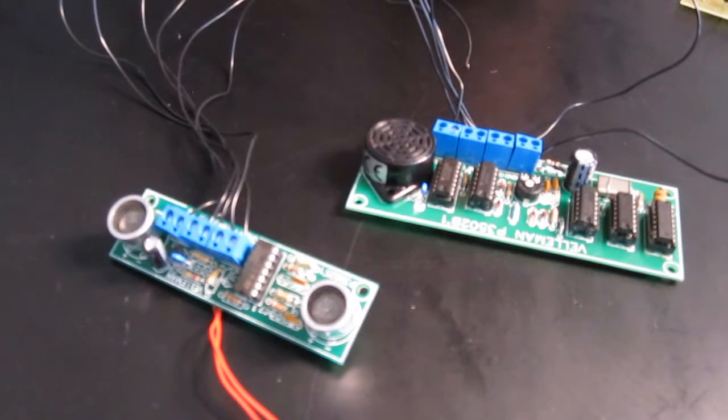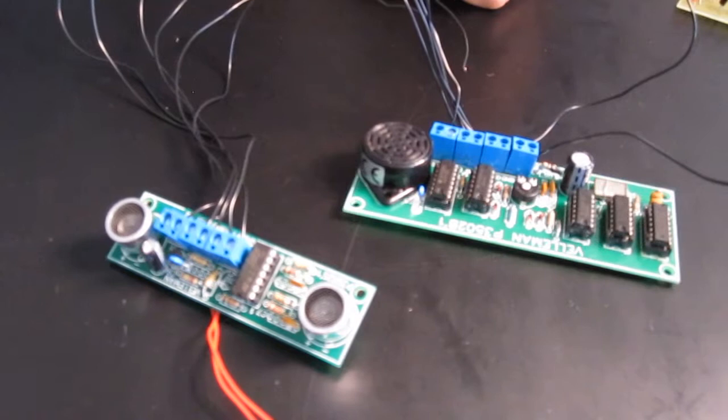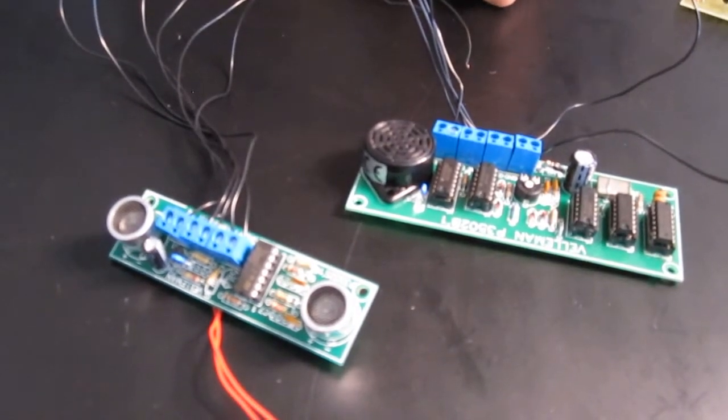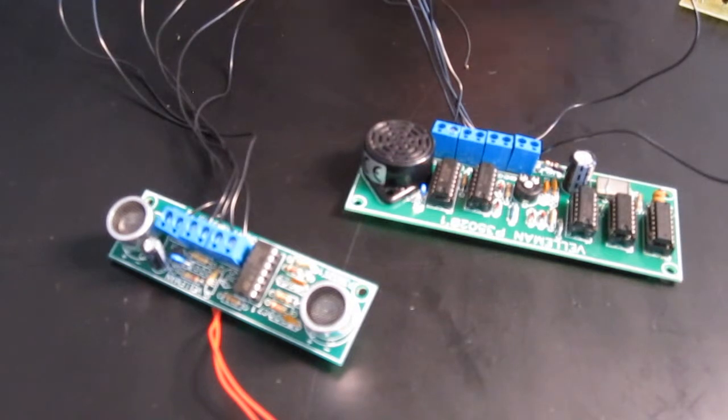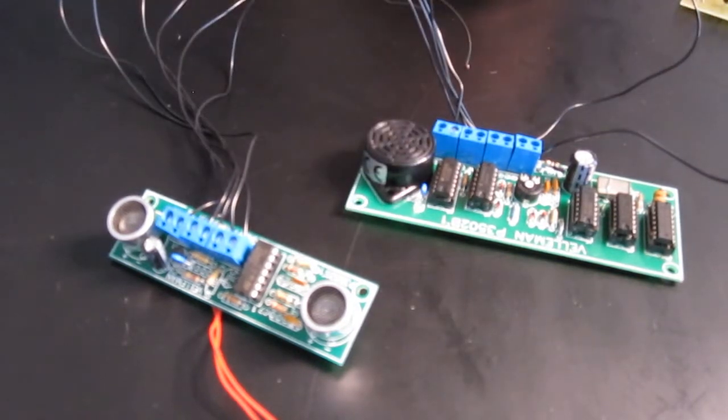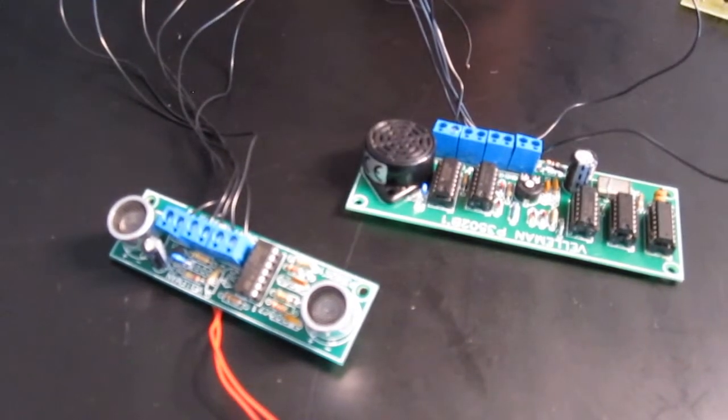I also have a potentiometer, and the potentiometer is meant to change the output voltage, which will actually change how sensitive the sensors are. So if you want the buzzer to buzz if an object is greater distance or less than distance, then you can actually just change the setting using the potentiometer.